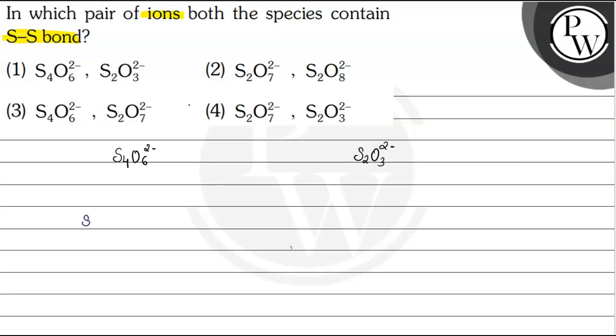So here, S double bond O, double bond O and one O negative, then S, S and S. Basically, this is the compound in which S single bond S bond is present.